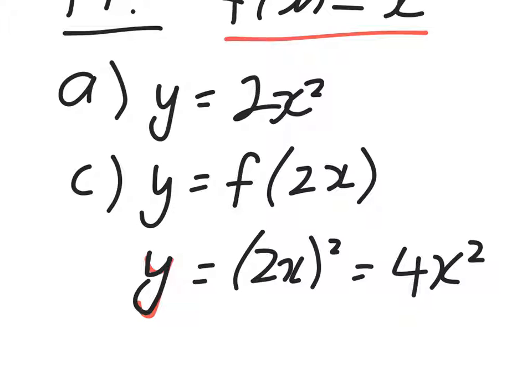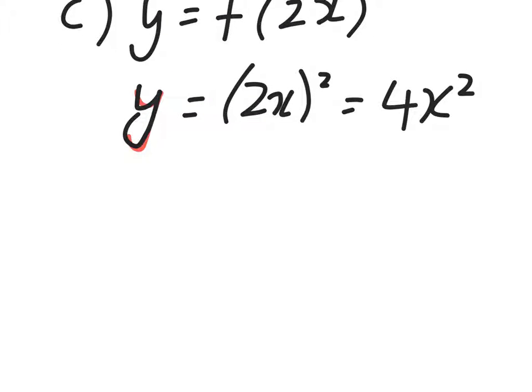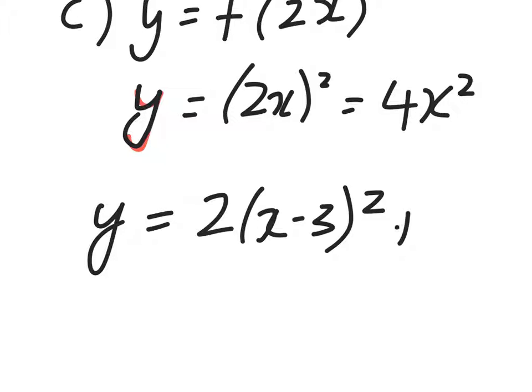And let's look at the last one. It's going to be y equals 2f of x minus 3. So f of x minus 3 means we're pulling out the x's from the original rule and replacing them with x minus 3. So it's 2 times x minus 3 squared plus 4. And if you look at that, that is the equation of a parabola or quadratic written in vertex form. We could expand that out to get it in standard form, but we don't necessarily need to do that.